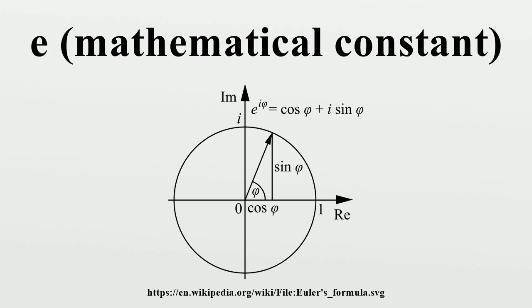The number e occurs naturally in connection with many problems involving asymptotics. A prominent example is Stirling's formula for the asymptotics of the factorial function, in which both the numbers e and pi enter.